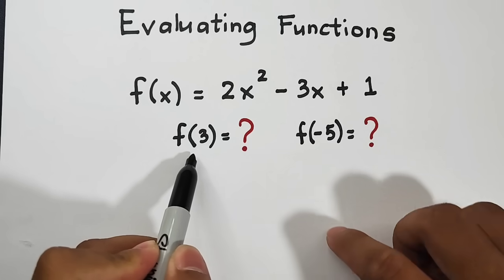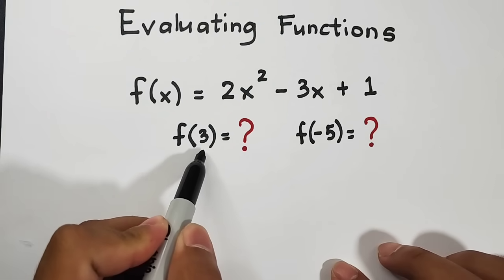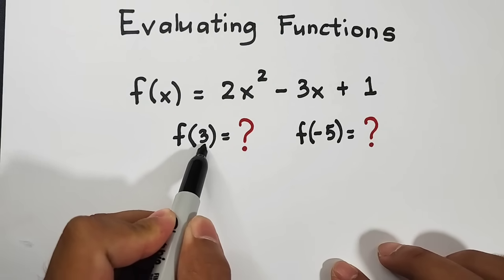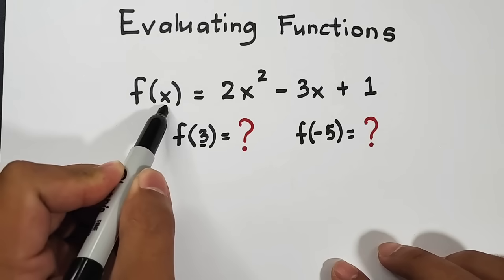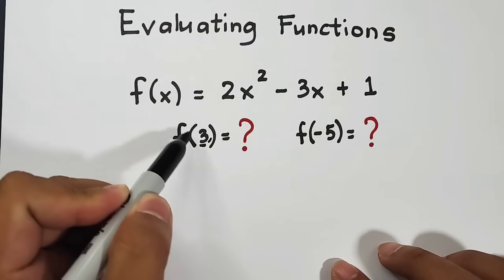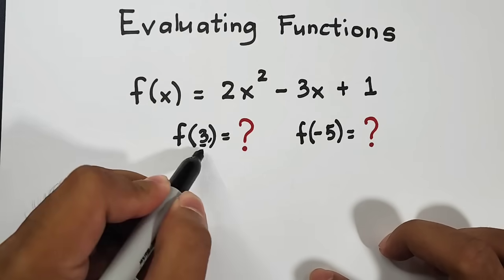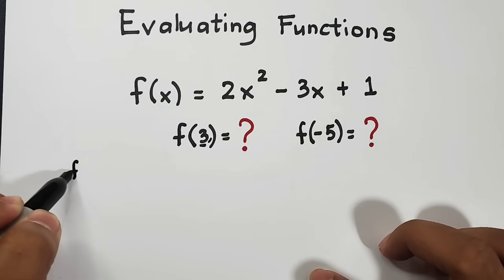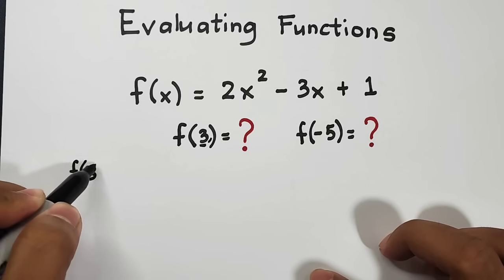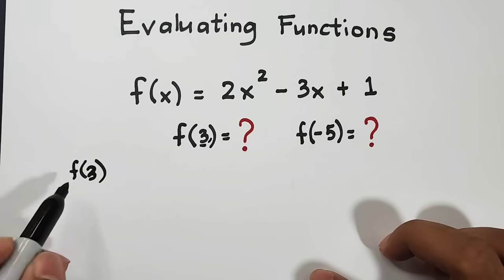Don't be confused if you encounter this. This means that your input or the value of your x that will be replaced here is equal to 3, like this one. So you have f of 3, we will replace this one.